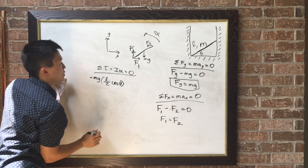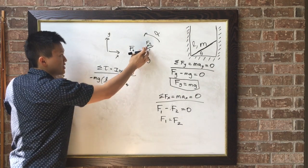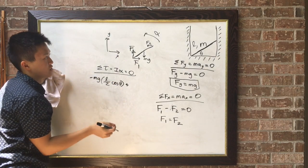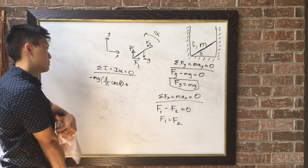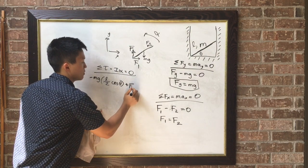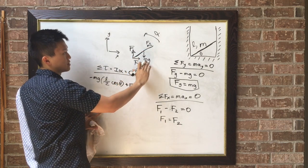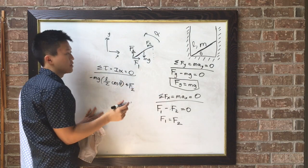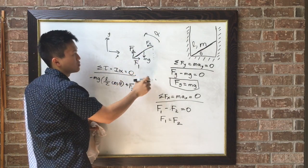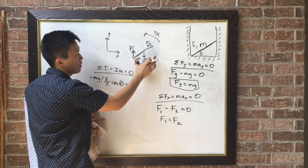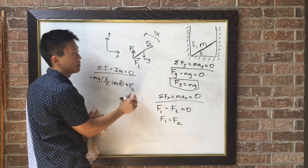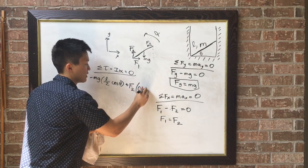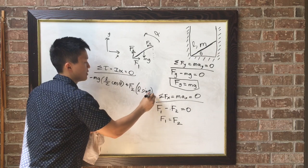plus, this F sub 2 causes a counterclockwise direction. So plus F sub 2 times the lever arm, which is this distance right here, the perpendicular distance from the force, which is L times sine theta, opposite over hypotenuse. So L times sine theta, this all equals zero.